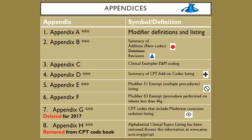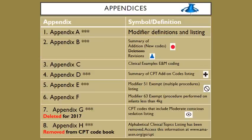Appendices are located in the back of the book right before your index. Appendix A contains your modifier definitions and listings — more extensive than the abbreviated version on the inside cover of your CPT manual. It really defines what each modifier means, so if you need clarification on which modifier to use, go to Appendix A. Appendix B is a summary housing all new codes, all revised codes, and all codes that have been deleted.